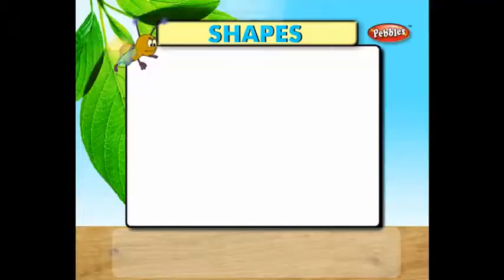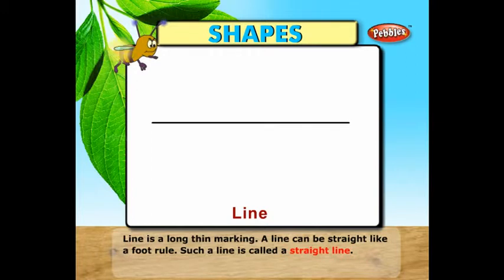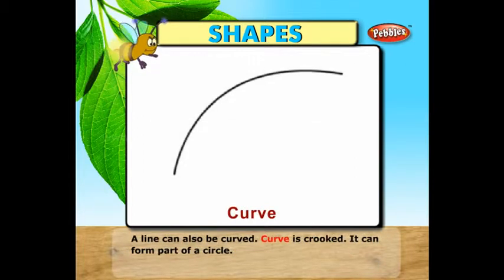Shapes. A shape is an outline of something: circle, square, triangle, and so on. A line is a long thin marking. A line can be straight like a foot rule; such a line is called a straight line. A line can also be curved. A curve is crooked and can form part of a circle.